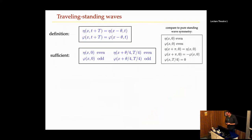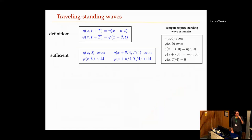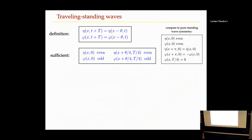Traveling standing waves both travel and are time-periodic — they go through a cycle and also shift. At a later time, the wave comes back to a spatial phase shift of itself: eta of x at t equals T is eta of x minus theta-zero. A symmetry that causes this: if eta is even and phi is odd, then at t over four this phase-shifted version is even and not-odd again, and that will go through a cycle back to itself.